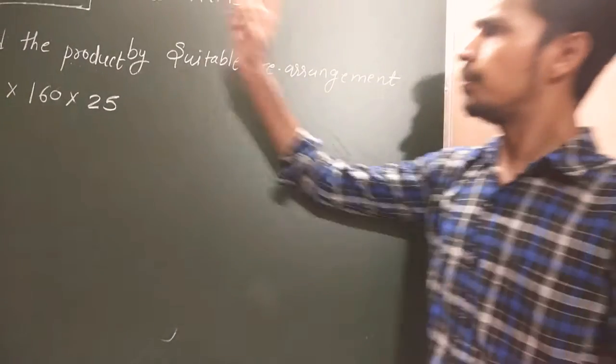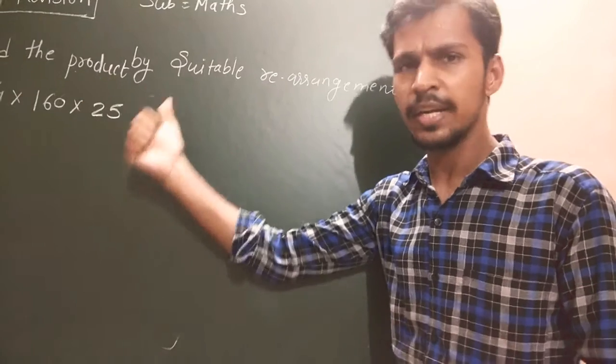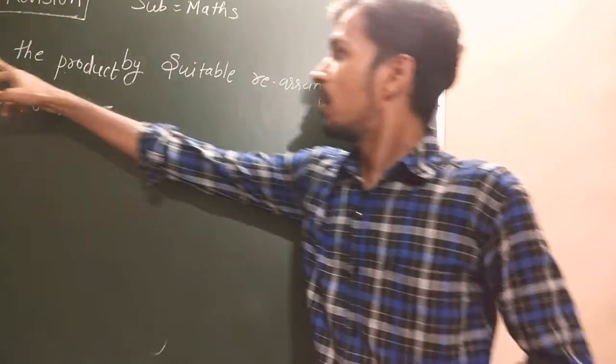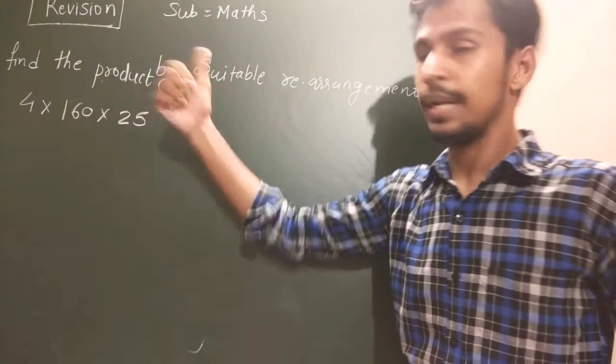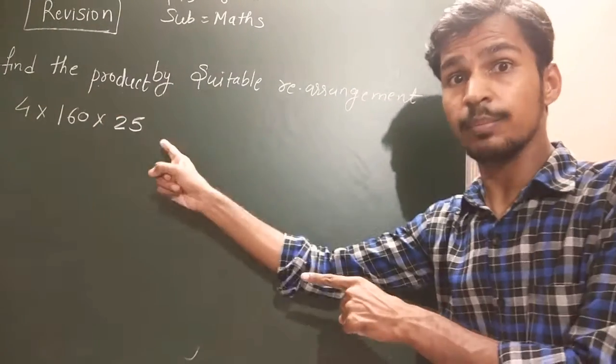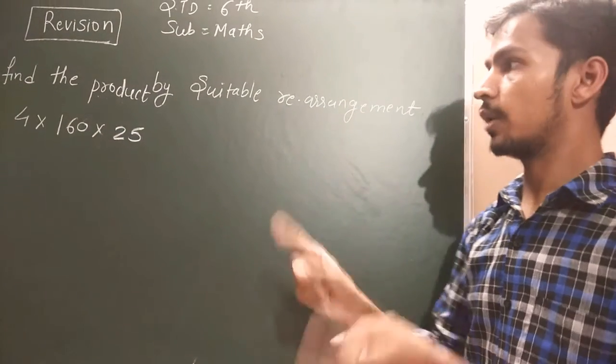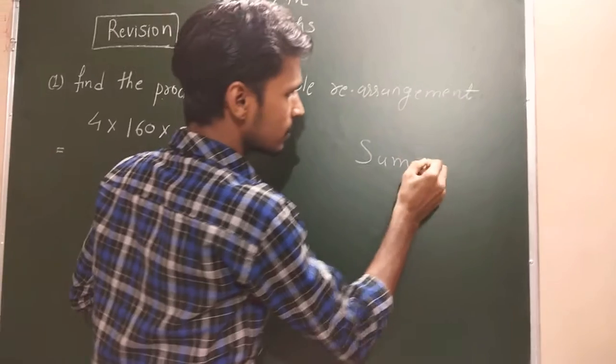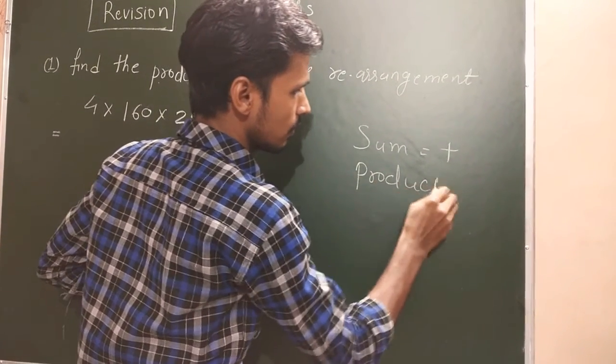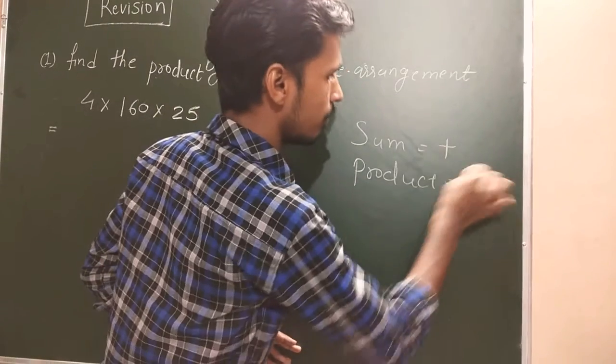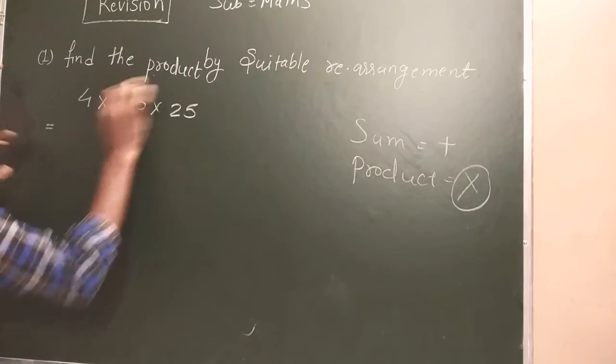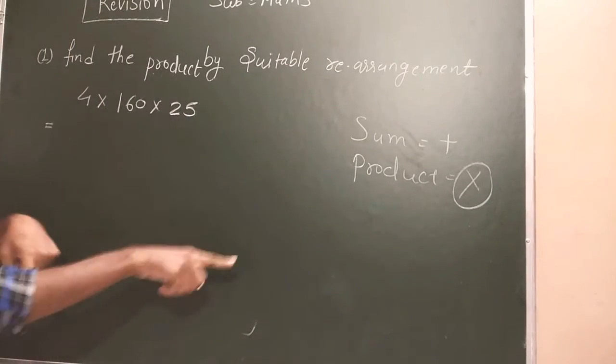Students, in previous question we had seen that which was related with the sum. And here I am going to explain: Find the product. Product means multiplication. And sum means plus. Product means which comes in multiplication. Here is you can see all values in multiplication.